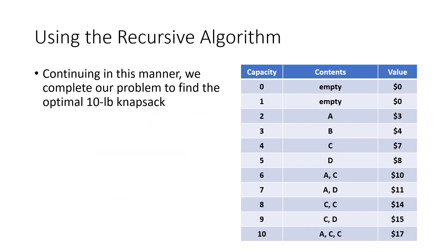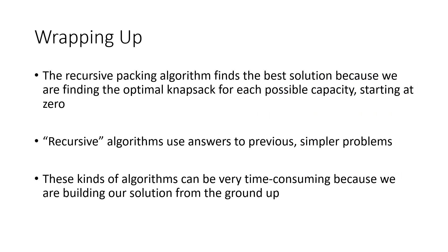Continuing in this way through capacities nine and ten, the optimal ten-pound knapsack turns out to be an A and two C's, giving a total value of seventeen dollars. The recursive packing algorithm is guaranteed to find the best solution because we find the best knapsack at every possible weight. It is time-consuming since we build the solution from the ground up and must go through each step, but it gives us answers to all the previous subproblems along the way.